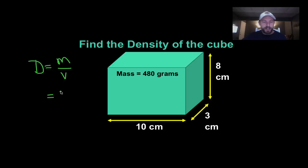Mass, 480 grams. Okay. Make sure we always have our units. And then we need to find the volume. We'll define volume of an object like this. It's length times width times height.